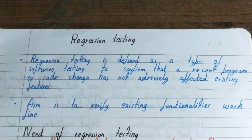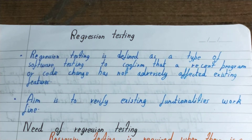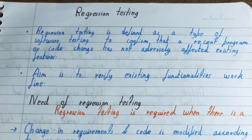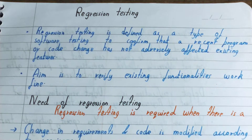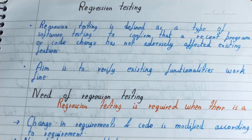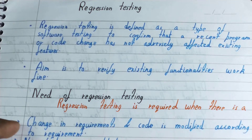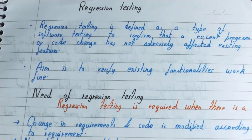The need for regression testing: first is change in requirements — the code needs to be modified accordingly. As time moves on, the requirements, expectations, and satisfaction level of the user change. When new technology comes, user needs also change, so the developer needs to address those requirements and do the modification in the code accordingly. When this situation arises, we need to perform regression testing.